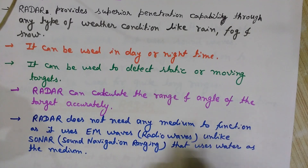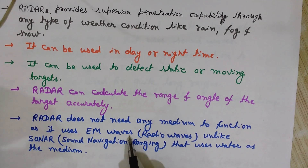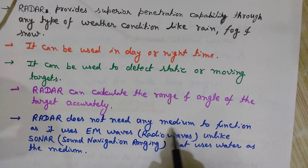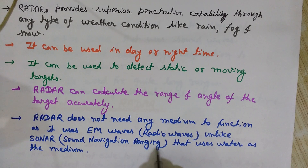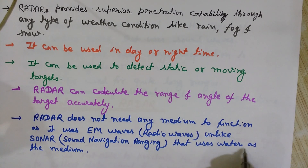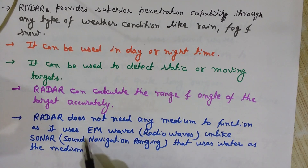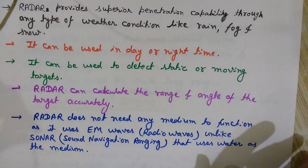The radar does not need any medium to function, as it uses electromagnetic waves — radio waves. Electromagnetic waves do not need any medium to travel; they can travel equally in vacuum, space, and air. This makes it better than sonar, which stands for Sound Navigation Ranging. Sonar uses sound waves, which cannot travel in free space, whereas radar's electromagnetic waves can travel in free space and air.